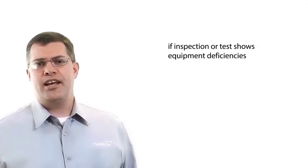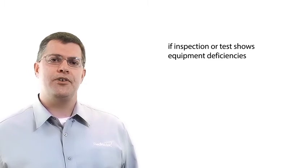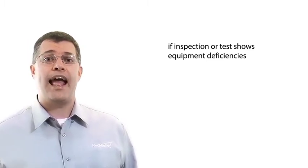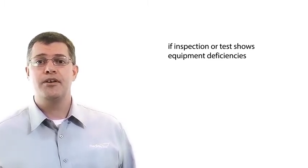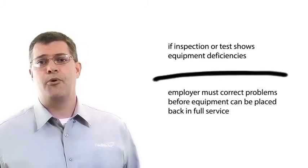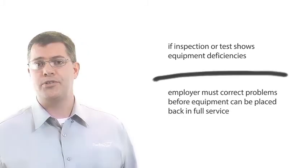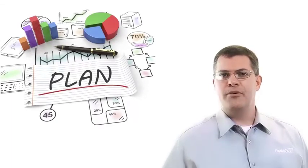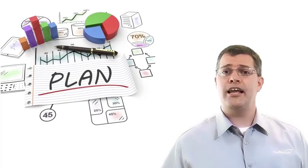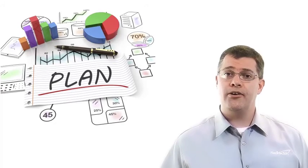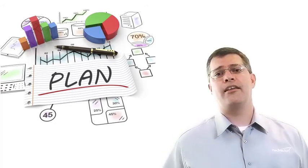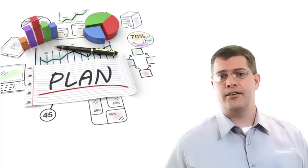A thorough description of the results of the inspection or test is also required. If the inspection or test shows one or more equipment deficiencies, such as equipment performance criteria falling outside the acceptable design limits, the employer must correct the problems before the equipment can be placed back in full service. This is the basic output of a mechanical integrity program — well-maintained process equipment for which failures are predicted and addressed before they can adversely affect the covered process.